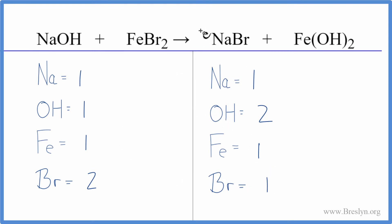If I put a two in front of the NaBr, that means one times two, that'll give me two bromines. Those are balanced. And then the sodium, one times two gives me two sodiums.